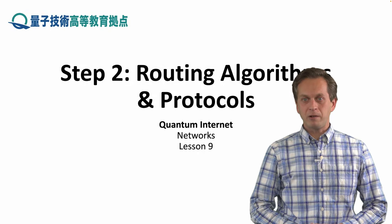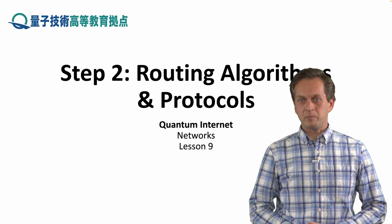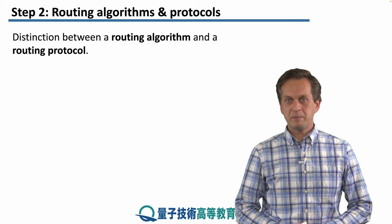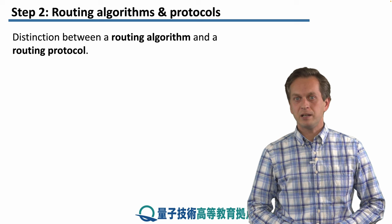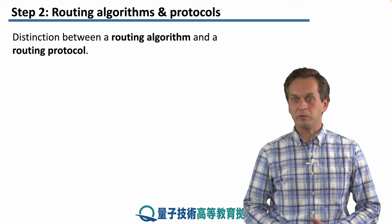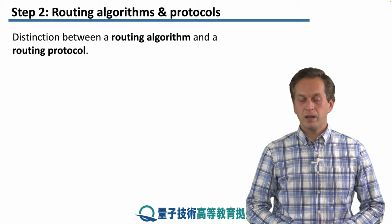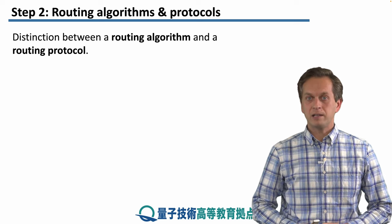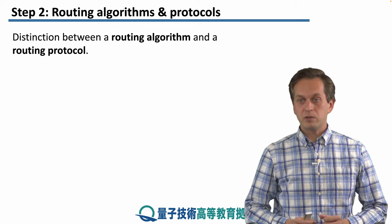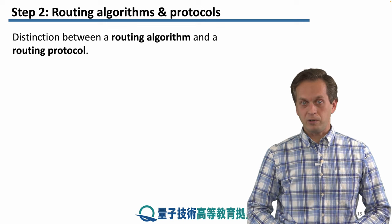Step 2: Routing algorithms and protocols. This step is going to be dedicated to how we route in a quantum network, and we're going to highlight the distinction between a routing algorithm and a routing protocol.